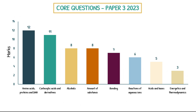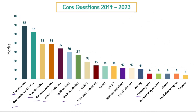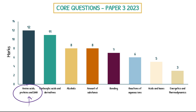Looking at the core questions for Paper 3 2023 specifically: first place, which surprised me, was amino acids, proteins, and DNA — the paper was very amino acids heavy, and it also included chromatography knowledge from that topic. Then carboxylic acids and derivatives, alcohols, amount of substance, bonding, reactions of aqueous ions, acids and bases, and energetics and thermodynamics. Chromatography on its own doesn't have many marks, but there's quite a bit of crossover with amino acids, proteins, and DNA.